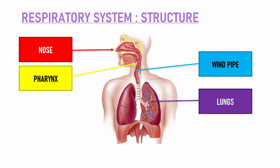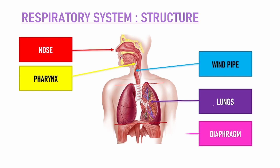Next is lungs. Lungs ek muscular organ hai hamaari body ke andar. Ye thoracic cavity ke andar present hote hai — this area below your neck is called the thoracic cavity. So thoracic cavity ke andar ye lungs present hote hai. There is also a diaphragm — diaphragm is a muscular partition in your body jo thoracic cavity aur abdominal cavity ke beech mein present hota hai. So this was the structure of your respiratory system, jahaan pe nose, pharynx, wind pipe, lungs, aur diaphragm present hai.